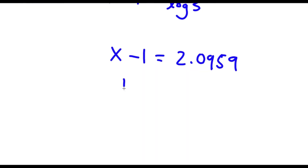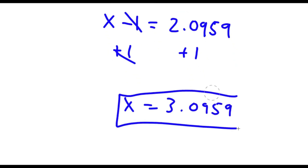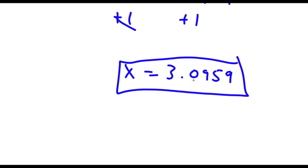Log 3 is approximately 0.4771, so 1 over log 3 equals approximately 2.0959. If I add 1 on both sides, these cancel out and I'm left with x is equal to 3.0959. So this is my answer.